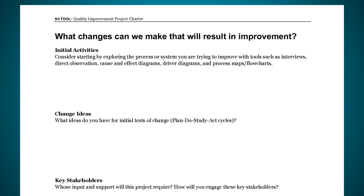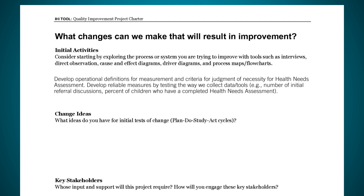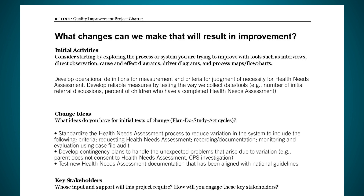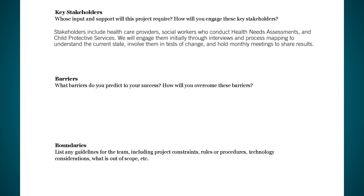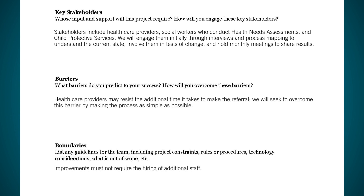In the last section — what changes can we make that will result in improvement — you'll be thinking more specifically about your ideas for improvement. There is space to record learning from tools such as a driver diagram or other tools that you can learn about in the QI Essentials Toolkit. Jot down any initial ideas you have for tests of change and specific people or groups whose support you'll need. There is also a space to consider potential roadblocks and constraints. Taking the opportunity to plan and think ahead with this charter template will give your project the best chance of success.